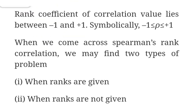Correlation always lies between minus 1 and plus 1. Just as with Carl Pearson's correlation coefficient where r lies from minus 1 to plus 1, here rho also lies from minus 1 to plus 1. When solving Spearman's rank correlation problems, there are two main types: when ranks are given, and when ranks are not given. When marks are given with repeated values, a correction factor must be added, which will be covered in later videos.